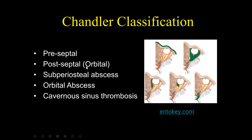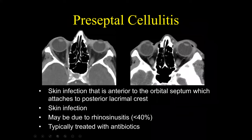Infections involving the periorbital region are classified by the Chandler classification: preseptal, postseptal, subperiosteal abscess, orbital abscess, and cavernous sinus thrombosis. This is the progression of disease that starts from preseptal cellulitis and eventually results in cavernous sinus thrombosis.